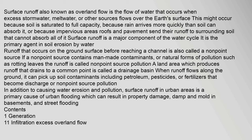Surface runoff is a major component of the water cycle. It is the primary agent in soil erosion. Runoff that occurs on the ground surface before reaching a channel is also called a non-point source. If a non-point source contains man-made contaminants or natural forms of pollution such as rotting leaves, the runoff is called non-point source pollution. A land area which produces runoff that drains to a common point is called a drainage basin.